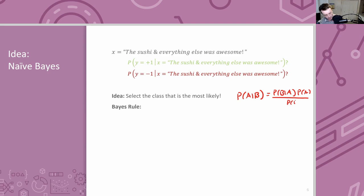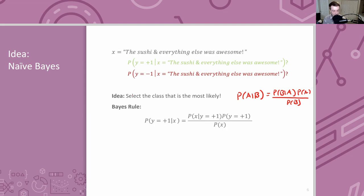In general P(a|b) is not equal to P(b|a) — they ask slightly different questions. One says: knowing b, what's the probability of seeing a? The other says: knowing a happened, what's the probability of seeing b? Bayes' Rule is a mathematical theorem that lets you use one to compute the other. In general, P(a|b) equals P(b|a) times P(a) divided by P(b).